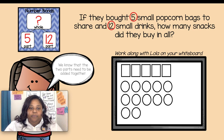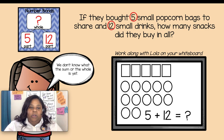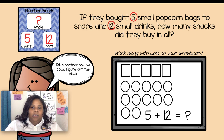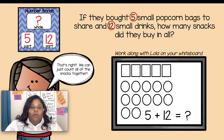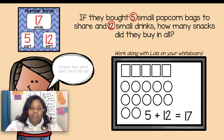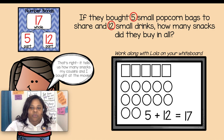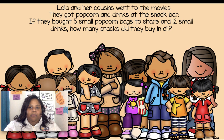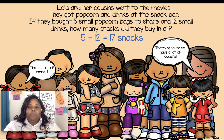Now let's write the part of the equation we know. We know that the two parts need to be added together, so five plus twelve. We don't know what the sum is yet — we don't know the whole. Tell a partner how we can figure out what the whole is. Pause the video and tell a partner. Great job — that's right. We can just count all the snacks together. Count them carefully, then count them again to check your work. Did you count 17? Great job! That tells us how many snacks Lola's cousins and she bought at the movies. Five plus twelve equals 17 snacks — that's a lot of snacks because we have a lot of cousins.